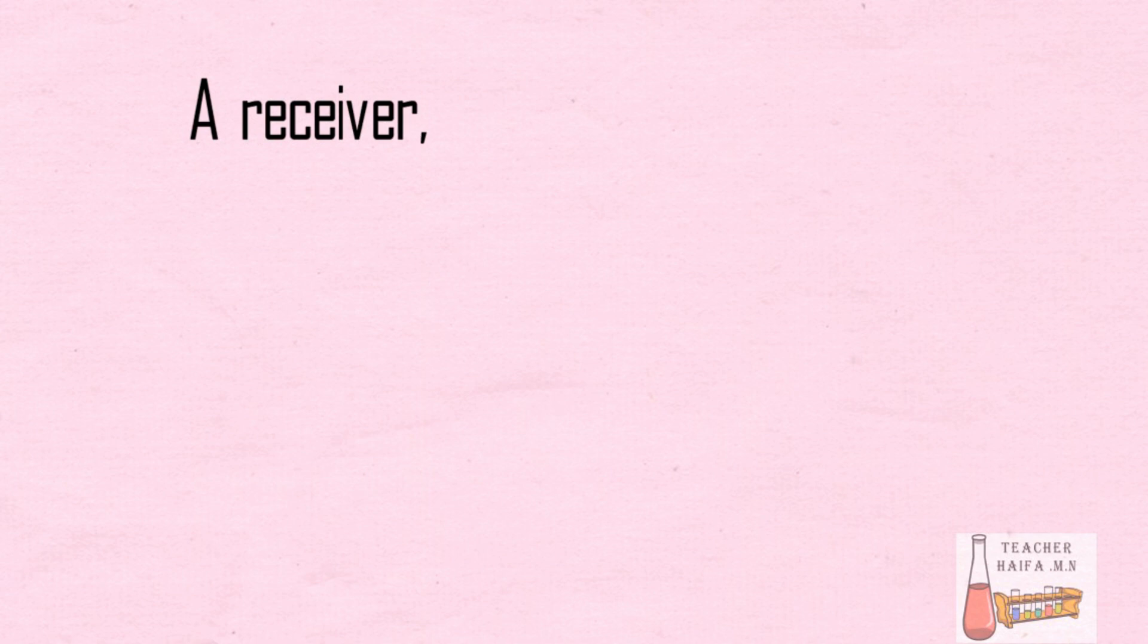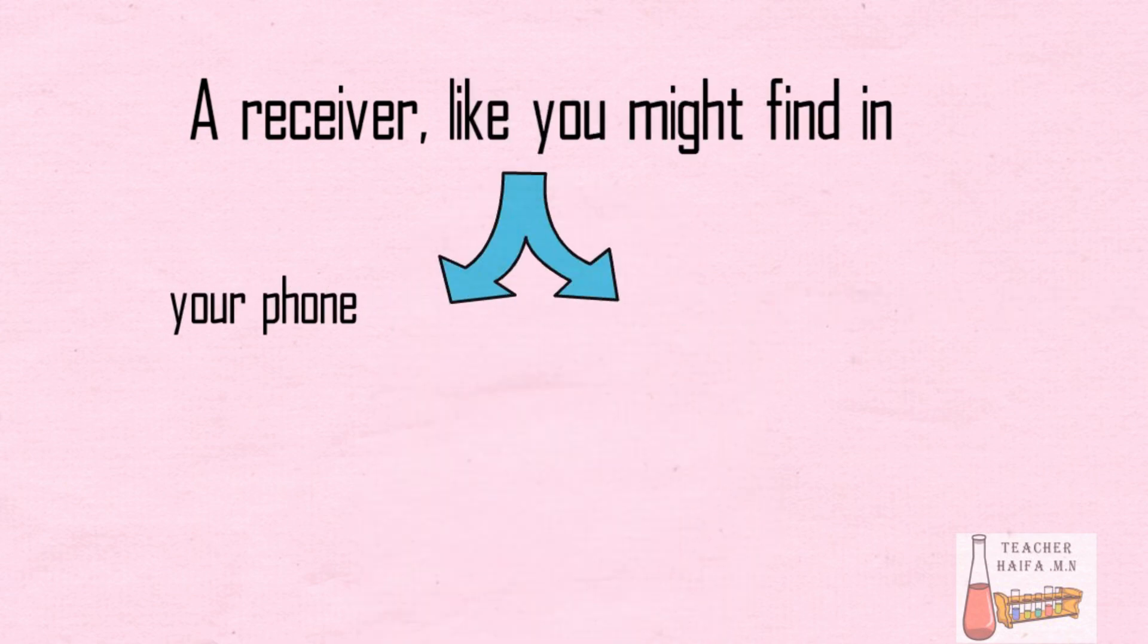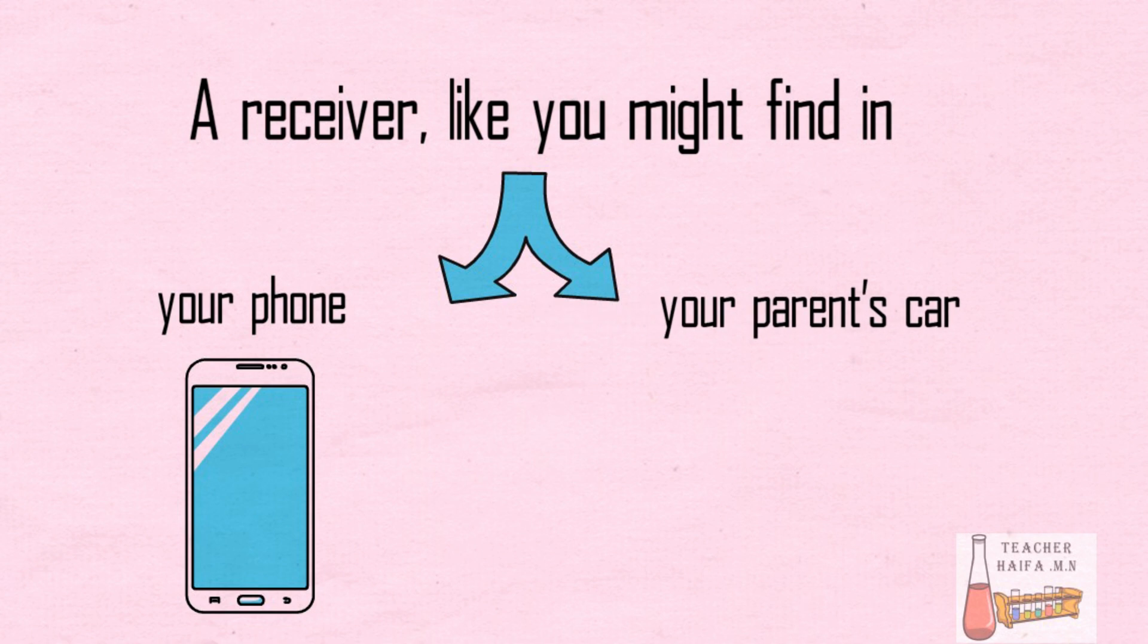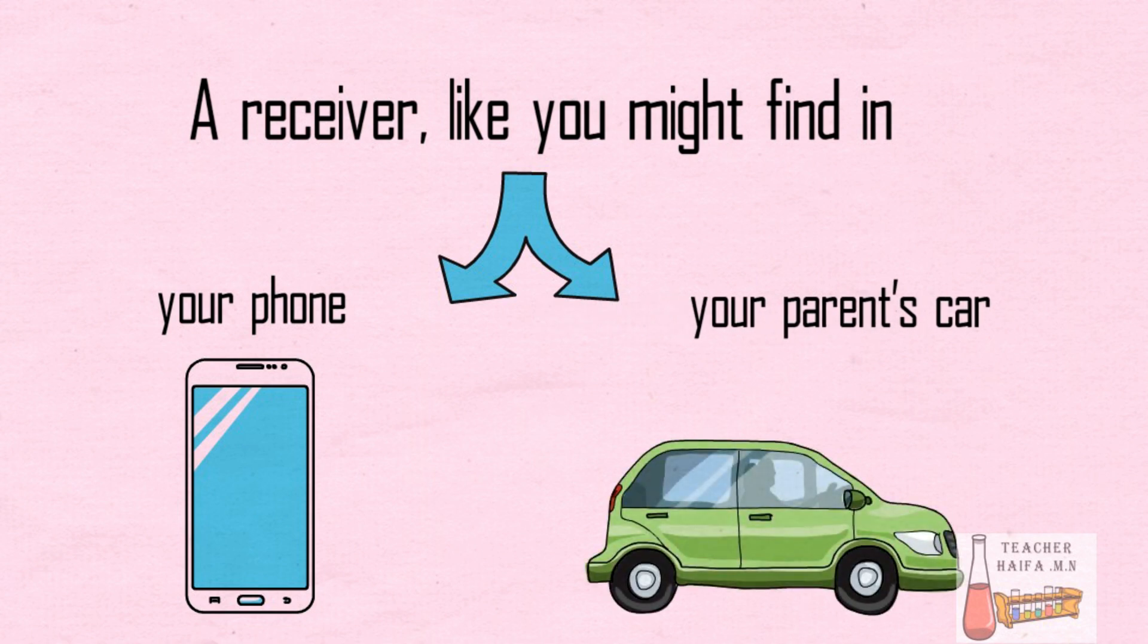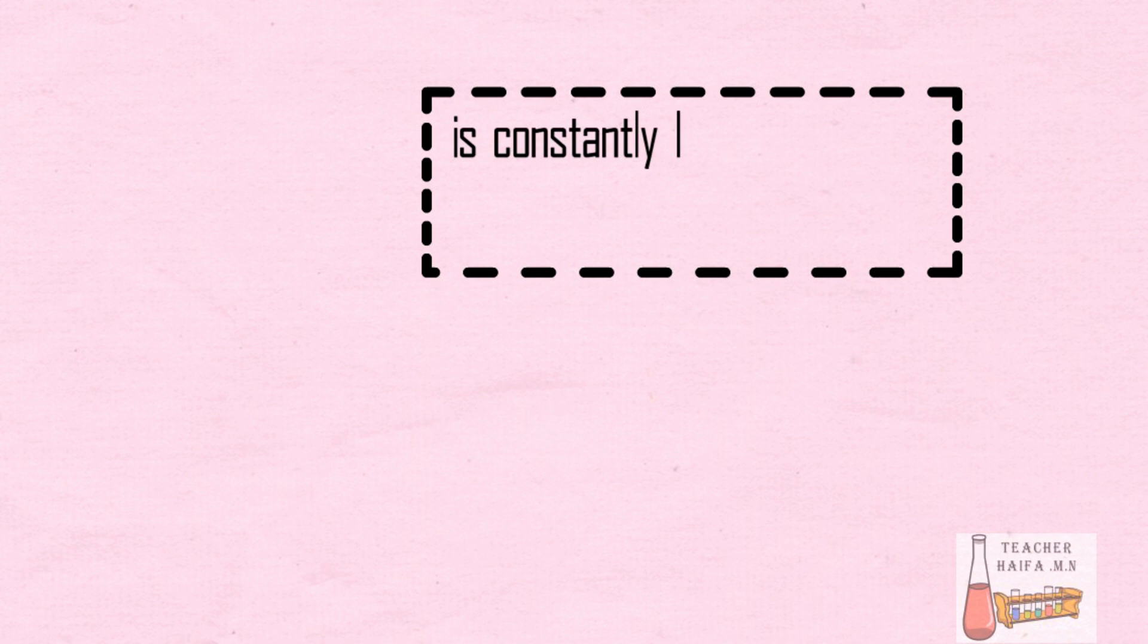A receiver, like you might find in your phone or in your parents' car, is constantly listening for a signal from these satellites.